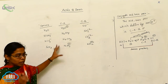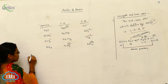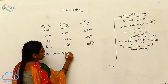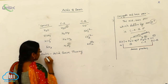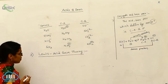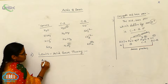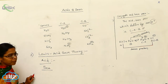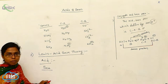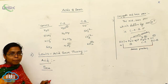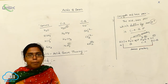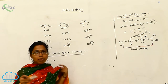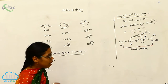The third theory is the Lewis acid-base theory. Arrhenius acid-base theory depends upon the compound dissolving in water. Bronsted acid-base theory depends upon protons. Lewis acid-base theory depends upon electron pairs.